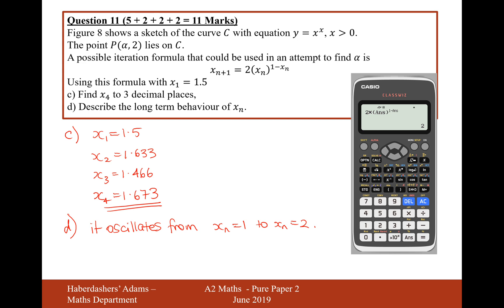It oscillates from xn equals 1 to xn equals 2. Okay, so that's just what happens when you continue to press the equals button. That's the long-term behavior of xn. So there we are. That's the answer for this question here. Okay, question 11, worth 11 marks. Let's now move on to question 12.